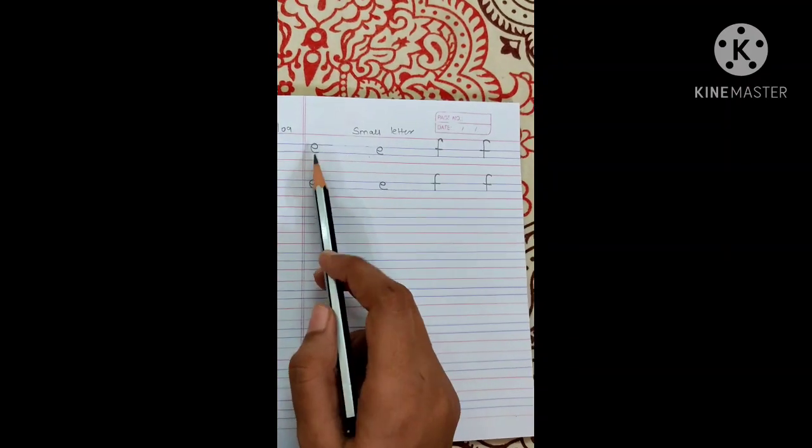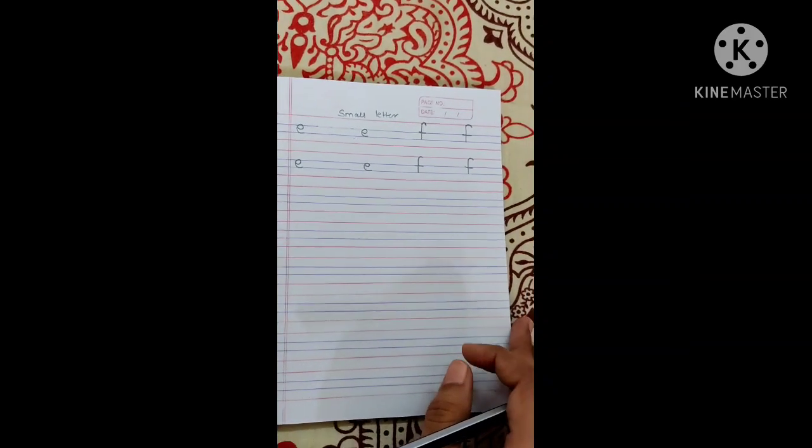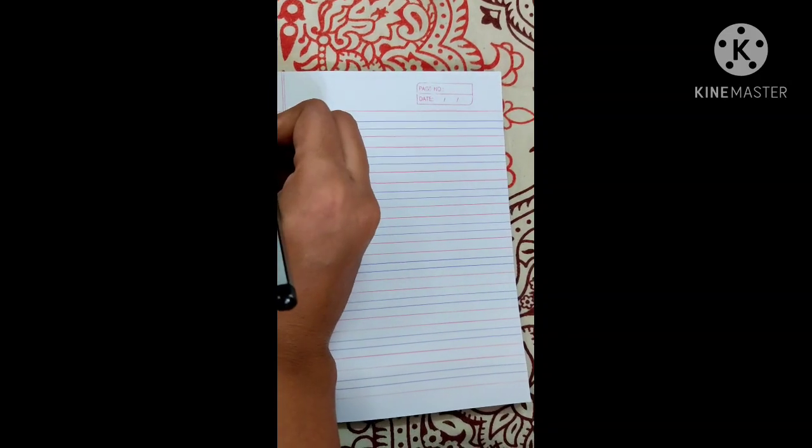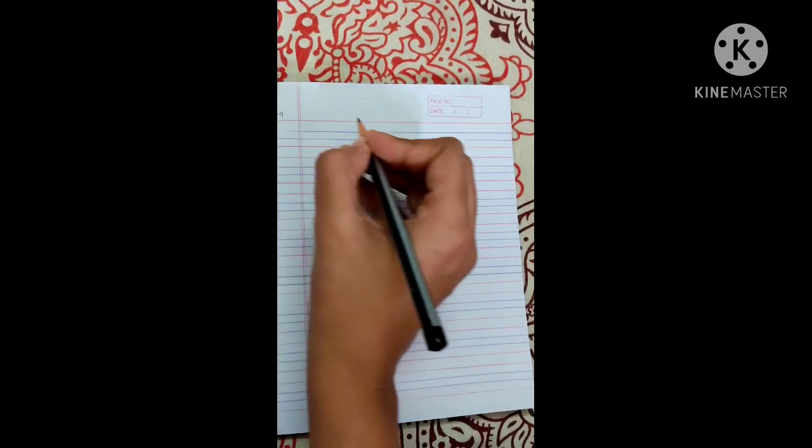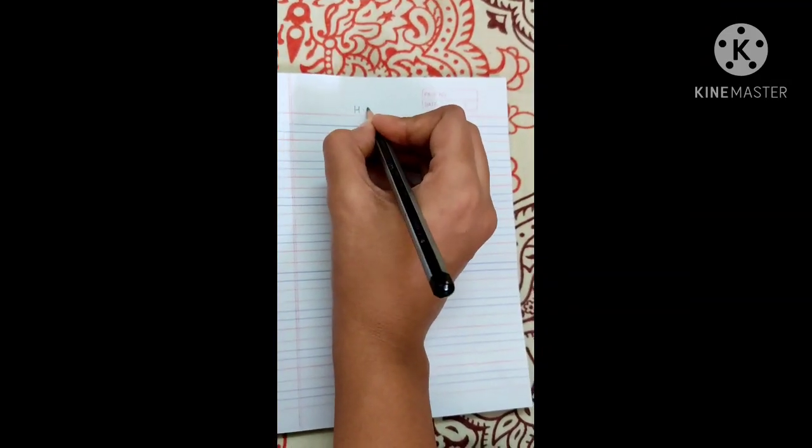So today we are going to learn small e and f. Now turn the page, again write here your date, 2809, this is your homework page.